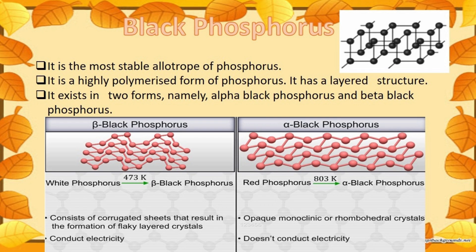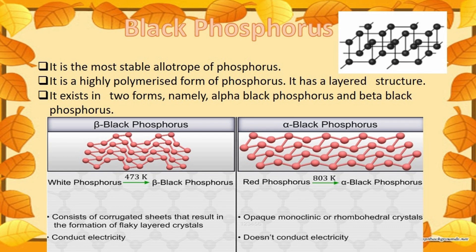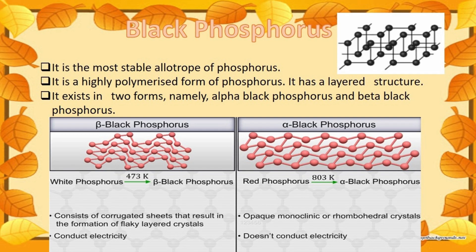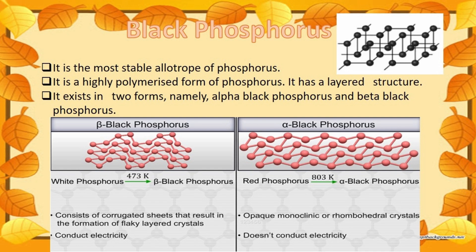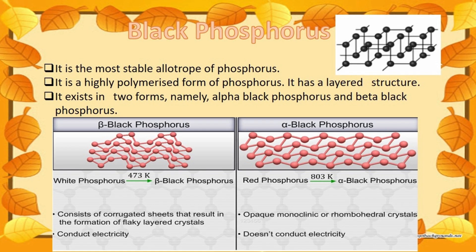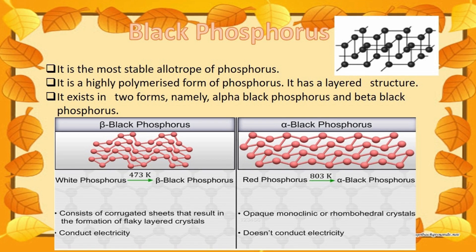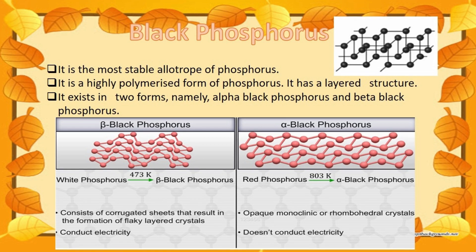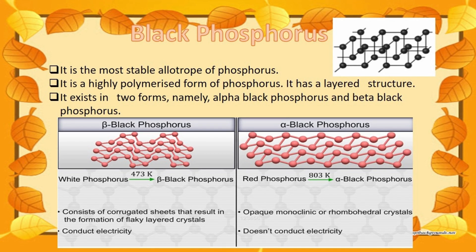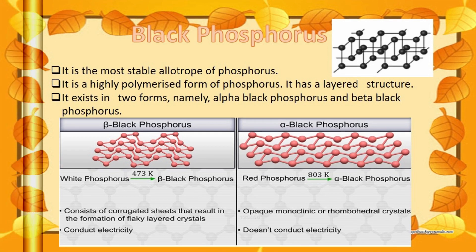Black phosphorus is the most stable allotrope of phosphorus. It is a highly polymerized form with a layered structure, and exists in two forms: alpha black phosphorus and beta black phosphorus. Beta black phosphorus is formed when white phosphorus is heated to around 473 Kelvin, while alpha black phosphorus is formed when red phosphorus is heated to around 803 Kelvin. Beta black phosphorus consists of corrugated sheets forming flaky layered crystals, whereas alpha black phosphorus forms opaque monoclinic or rhombohedral crystals. Beta black phosphorus conducts electricity, while alpha black phosphorus does not.